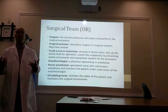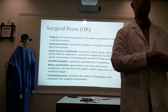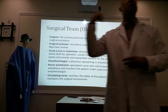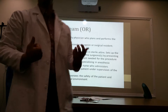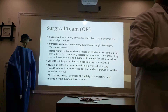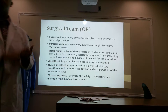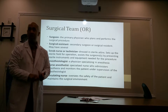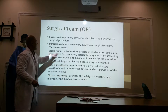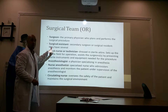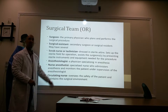For instance, if the surgeon doesn't have a particular piece of equipment or instrument on their table, or they need certain drugs for the procedure — they're sterile, so they can't go opening up cabinets and grabbing things. This is where the circulator comes in. The circulator will grab those extra equipment, extra drugs, and extra instruments for the sterile individuals. They are essentially the non-sterile assistant.